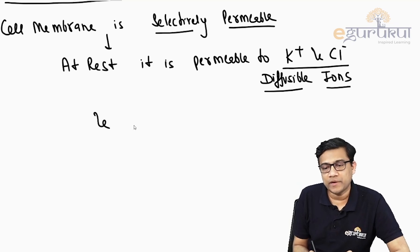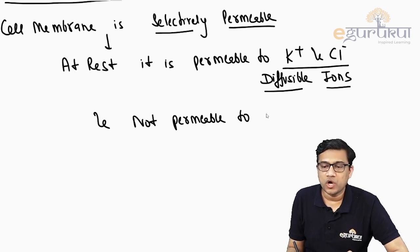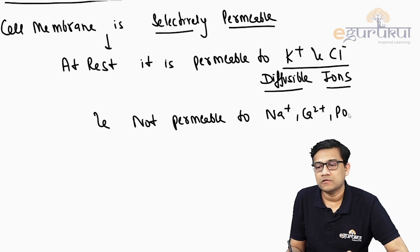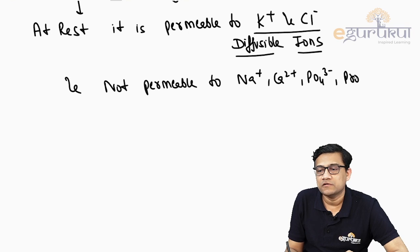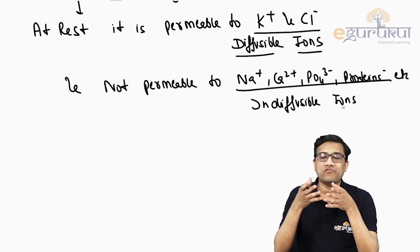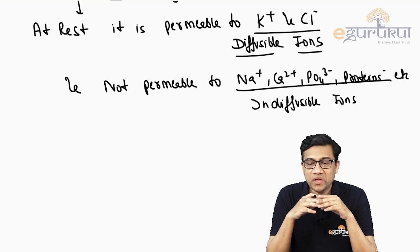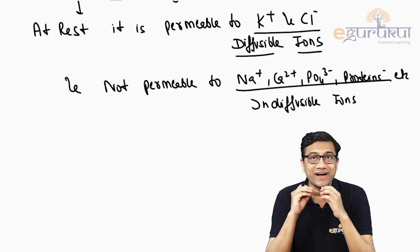The membrane is not permeable to sodium, calcium, phosphate, and proteins. These are therefore called indiffusible ions. So there are two categories of ions: diffusible and indiffusible.